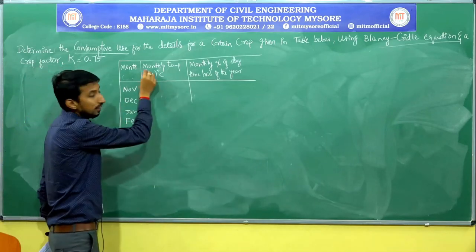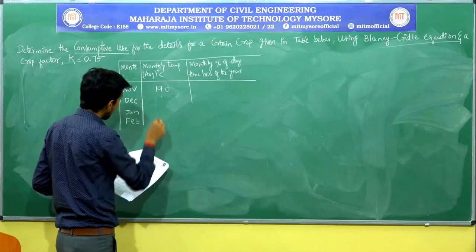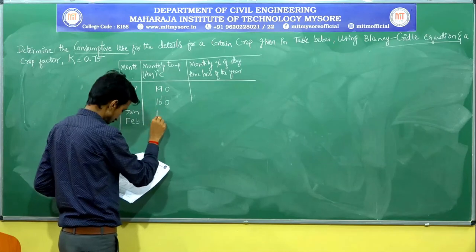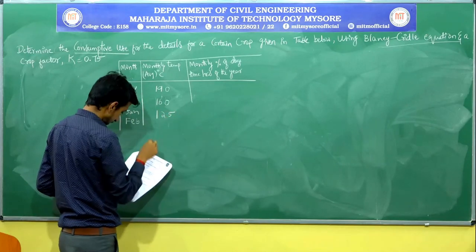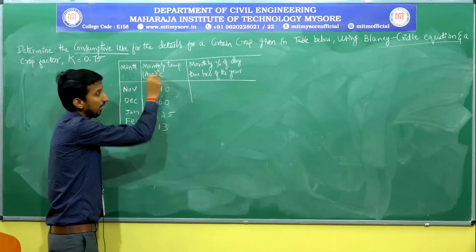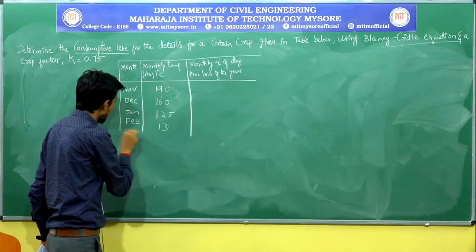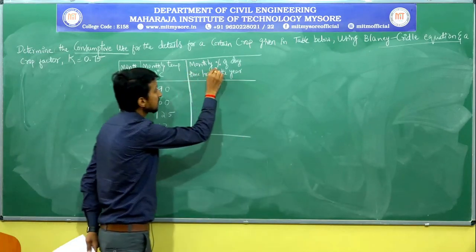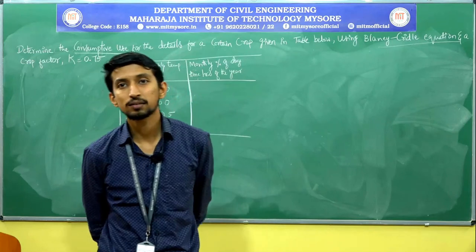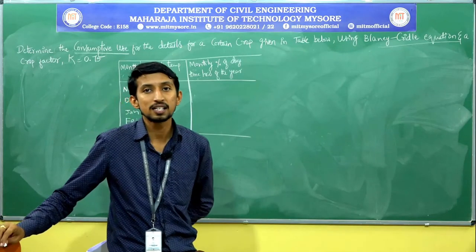The monthly mean temperatures are: November is 19°C, December is 16°C, January is 12.5°C, and February is 13°C. The temperature values are given in degrees centigrade.